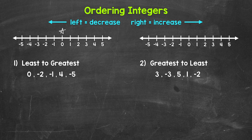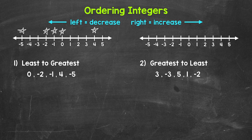Zero is first, right here. Then we have negative two, then negative one, then four, and lastly negative five. We want least to greatest here. Remember, the further left, the smaller the value; the further right, the greater the value. So the integer furthest to the left will be our least, which is negative five. Let's start with negative five. From there, all we need to do is work our way right, since we increase in value as we go right.